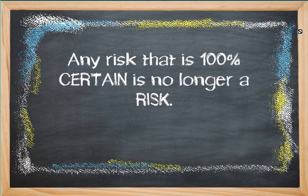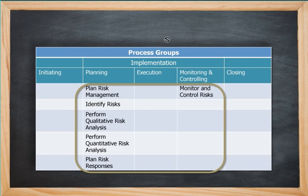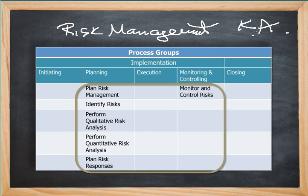Any risk that is 100% certain is no longer a risk. It's a certainty. For those of you in project management land, the PMBOK Guide has all sorts of processes that are involved with risk management, and these happen to be processes in the risk management knowledge area. We use KA to mean knowledge area.